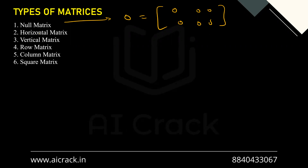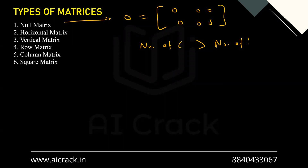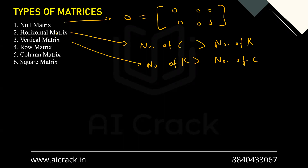For a horizontal matrix, the name tells us it extends in the horizontal direction — meaning the number of columns is greater than the number of rows. Similarly, for a vertical matrix, the number of rows is greater than the number of columns.